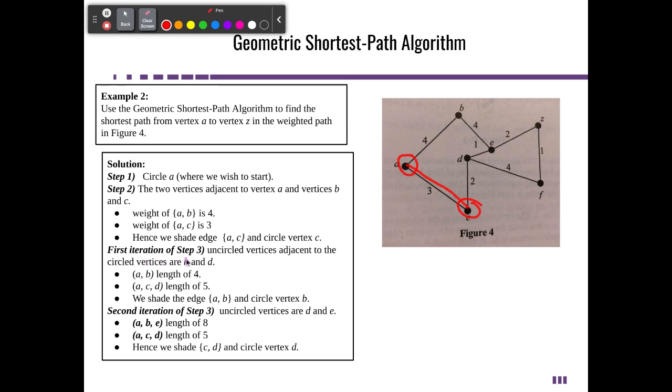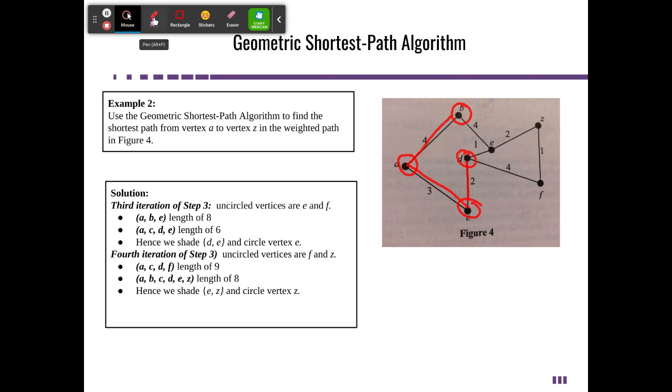Now we start on the iteration of step three. We look at the uncircled vertices adjacent to the ones that are circled, and we find out that's B and D. The length from A to B is four, and the length from A to C to D is going to be five. Because it's the shortest route, we choose A to B and we circle B. Next iteration, we're looking for those vertices that are adjacent to the circled. That'd be D and E. We identify that ABE would be four plus four, which is eight, and ACD would be three plus two, which is five. So we'll shade CD and circle D.